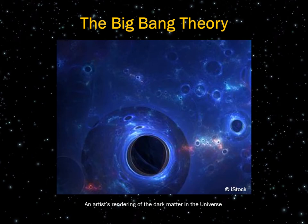Dark energy and dark matter make up about 95% of the observable universe combined, aside from cosmic microwave radiation and the energy left over from nuclear fusion reactions. Dark matter does not absorb, reflect, or emit light, and the exact chemistry and origins of dark matter are unknown. The expansion of the universe is due to the presence of dark energy and dark matter. This is an artist's rendering of the dark matter in the universe.